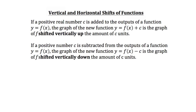The next important concept relates to shifts of functions — we have vertical and horizontal shifts. If a positive real number c is added to the outputs of a function y equals f of x, the graph of the new function y equals f of x plus c will be the same graph shifted vertically up by c units. If a positive number c is subtracted from the outputs, the graph of y equals f of x minus c is the graph of f shifted vertically down by c units.